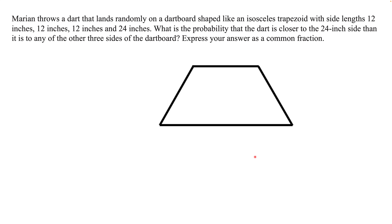This is our dartboard — it's an isosceles trapezoid, symmetric with respect to the vertical line that goes through the middle of it. The left side and the right side are mirror images of each other. The bottom base of the trapezoid is 24 inches, and the other three sides are all 12 inches.